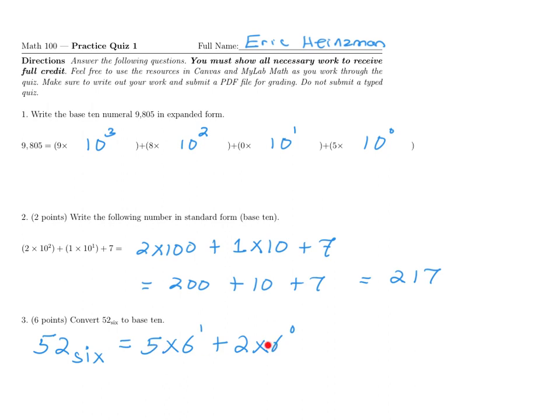Therefore, we can write this as 52 base 6, which is really 5 times 6 to the first plus 2 times 6 to the power of 0. So you still expand things out like we did in this question, but here, instead of using a base of 10, we're using a base of 6. Now that this thing is expanded, we can simplify this down to a single number.